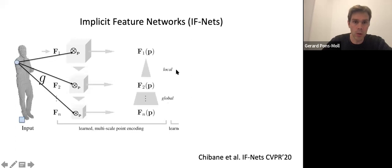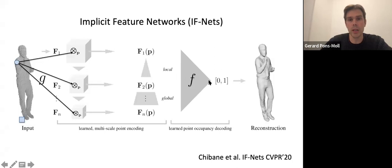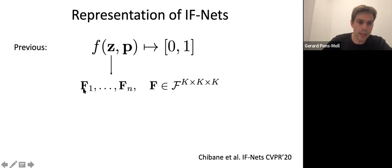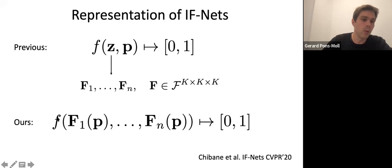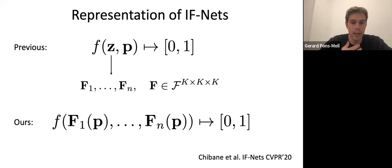At the beginning you have more local details and at the end you have a more global representation of the input. You send these multi-scale deep features into a decoder and ask the network to predict inside or outside. Mathematically this is a small change, but it makes a big difference. We turn the latent code — which had no 3D structure — into a multi-scale grid of deep features. Instead of sending point coordinates directly, we evaluate these deep features at continuous point locations. These deep features do have information about shape because we're doing 3D convolutions, extracting things related to curvature and global shape statistics, and you will also be more robust to rotations and translations.